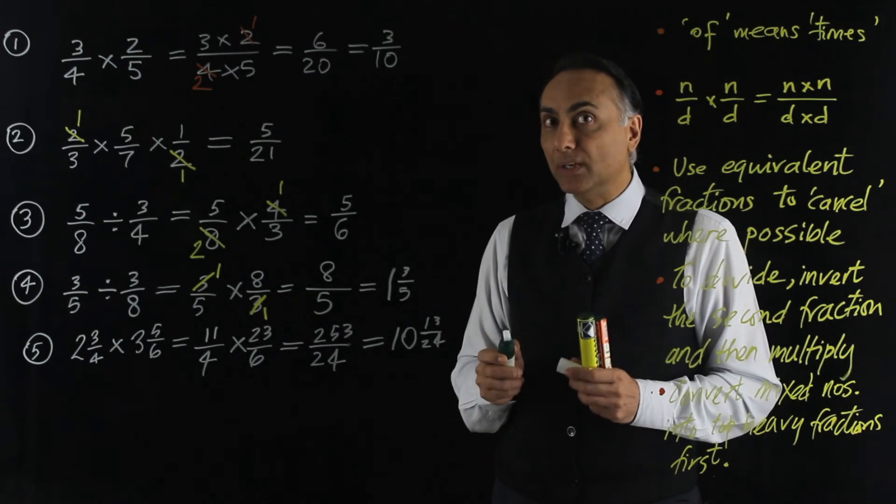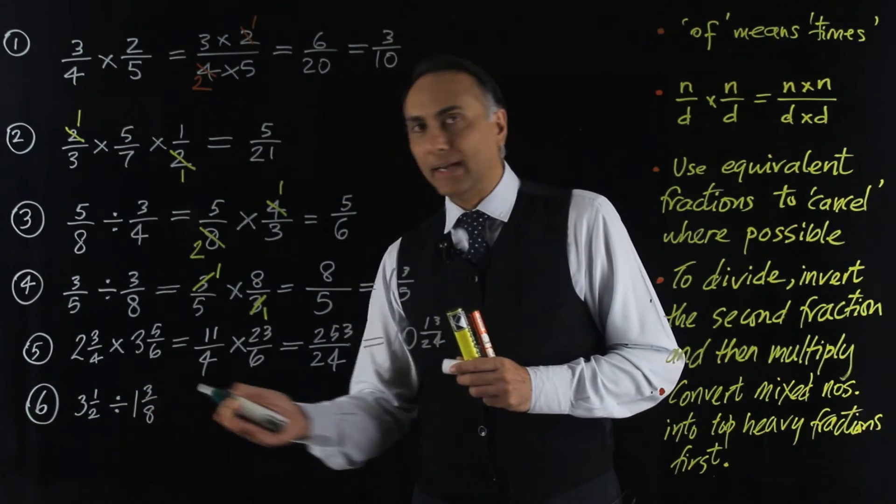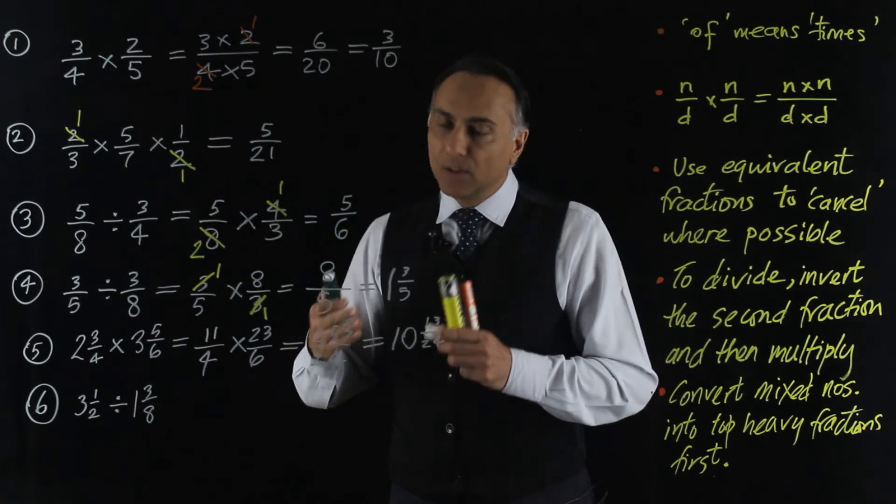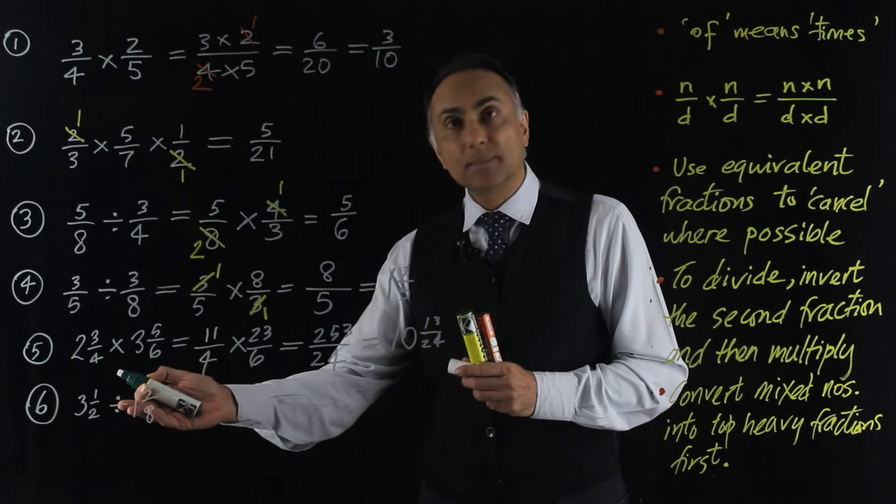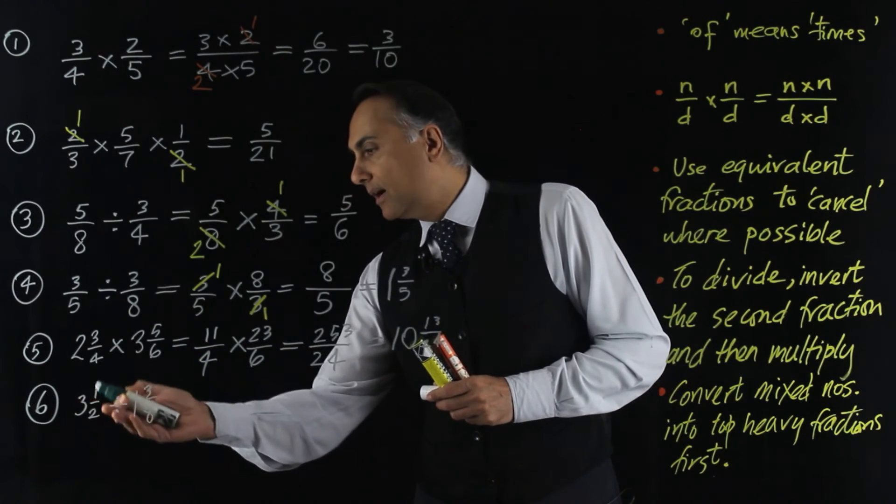Let's now do a division involving mixed numbers. Three and a half divided by 1 and 3 eighths. The first thing is to turn the mixed numbers into top-heavy fractions. So three and a half.